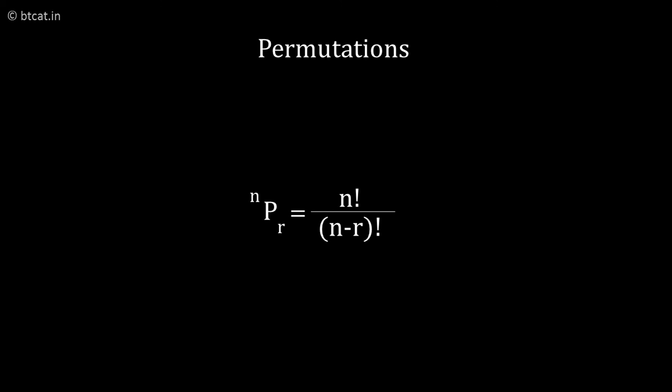So NPR by formula is N factorial divided by N minus R factorial. So 20P4 will give us 20 factorial divided by 16 factorial. As you can understand, NCR into R factorial will always give us NPR.